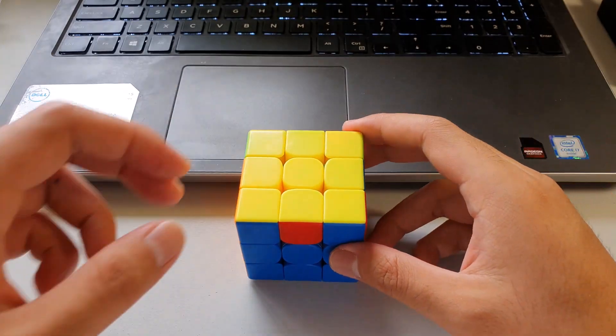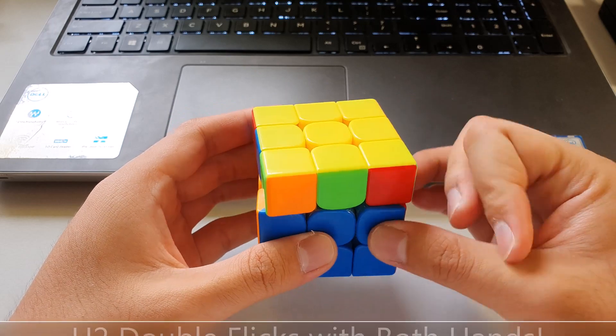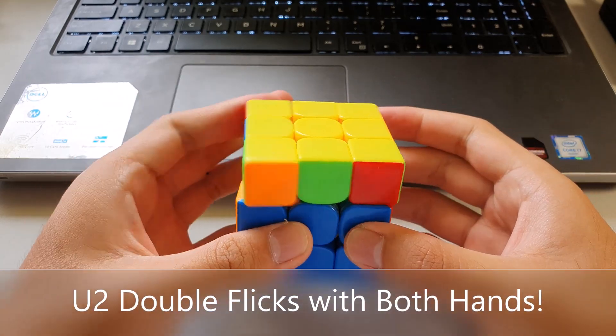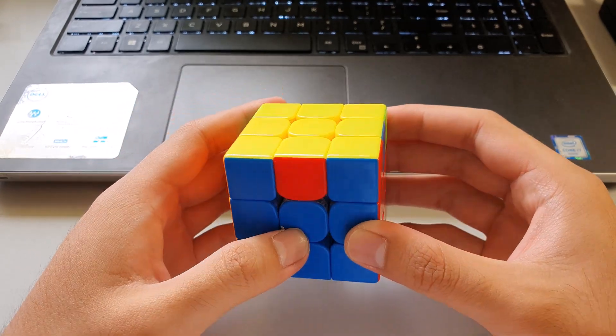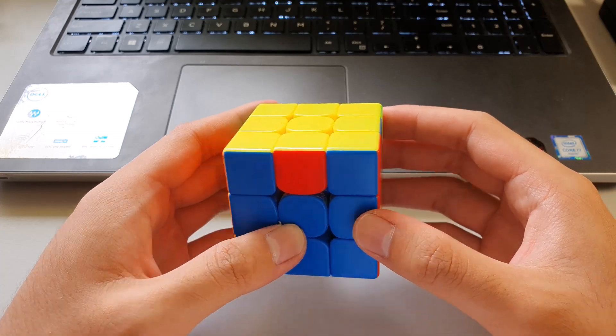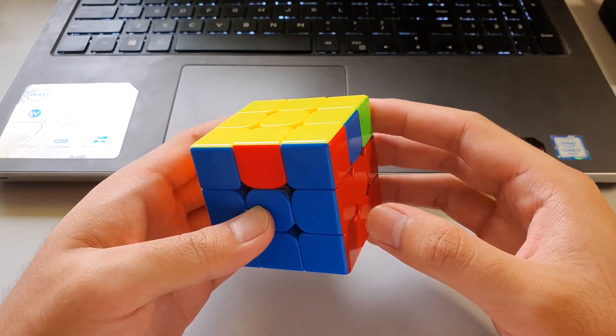For the RB perm, it is important that you know how to do U2 flicks with your right hand and your left hand, because the algorithm requires alternate U2 flicks with both hands like this.